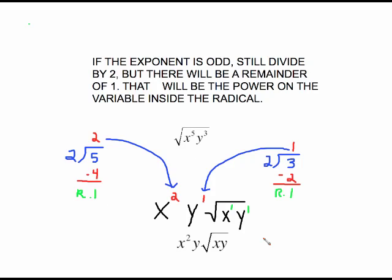When dealing with square roots with odd powers, the remainder power will always be 1. I point out the remainder here because when we move into cube roots or other roots in another video, we'll have a different remainder. But for square roots, it's just a matter of having a power of 1 on each leftover variable.